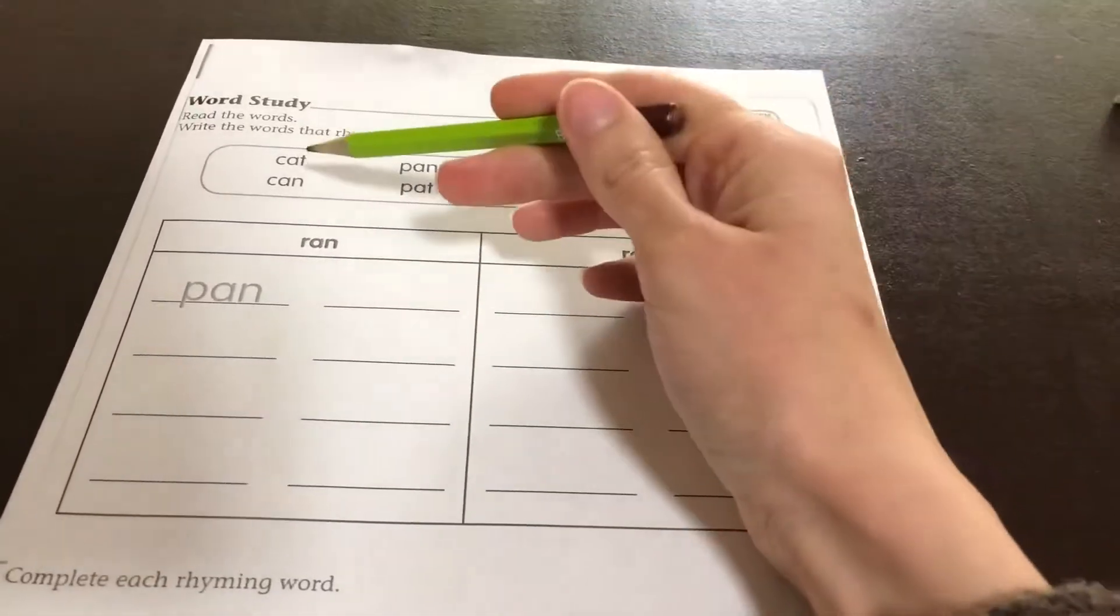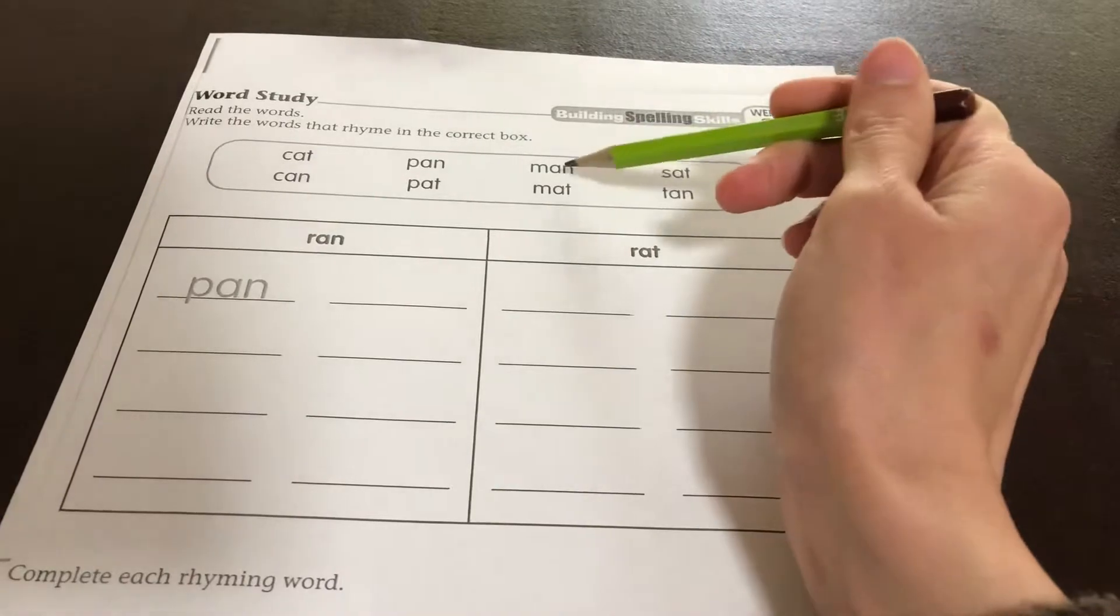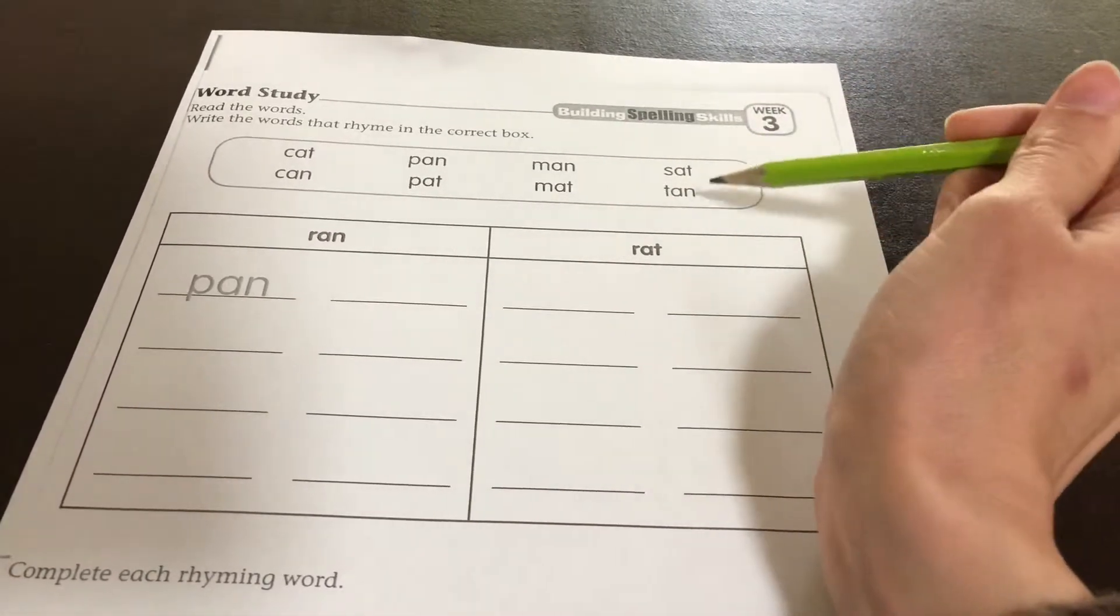Now our spelling words are cat, can, pan, pat, man, mat, sat, tan.